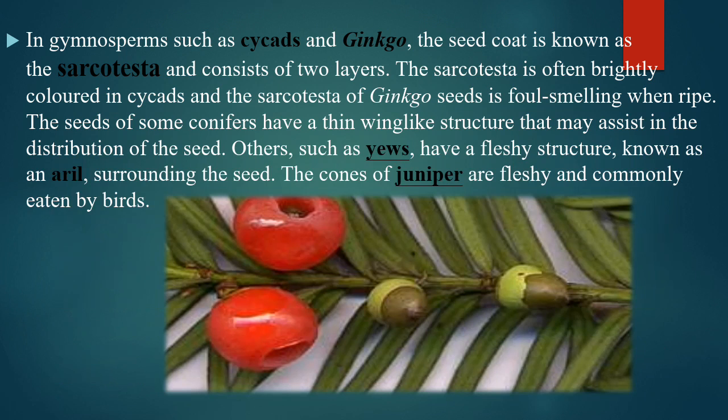In gymnosperms such as cycads and ginkgo, the seed coat is known as the sarcotesta and consists of two layers. The sarcotesta is often brightly colored in cycads, and the sarcotesta of ginkgo seeds is foul-smelling when ripe. You can observe here in the diagram.